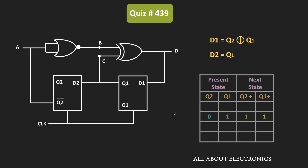Now let's consider the next case where the initial value of Q2 and Q1 is 0 and 1. With these values, D1 = 0 XOR 1 = 1, and D2 = Q1 = 1. So if Q2 and Q1 start as 0 and 1, then D1 and D2 are both 1. After the clock pulse the values of Q1 and Q2 become 1 and 1, meaning the values of Q2 and Q1 change, and because of that the value of ABCD will also change.